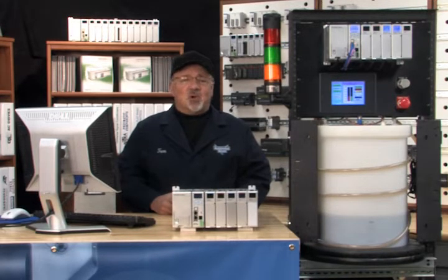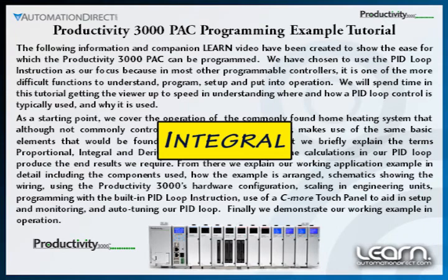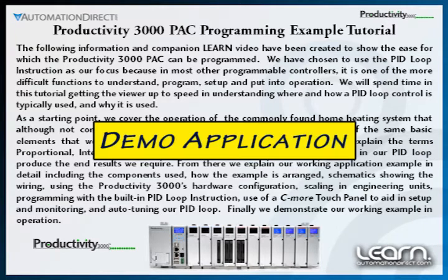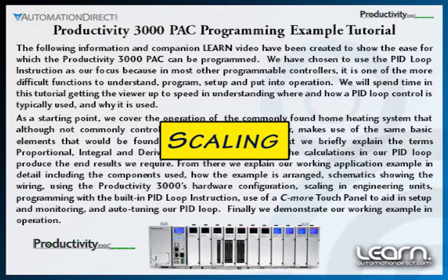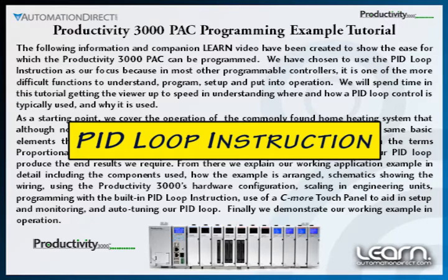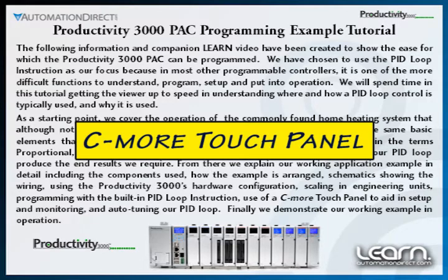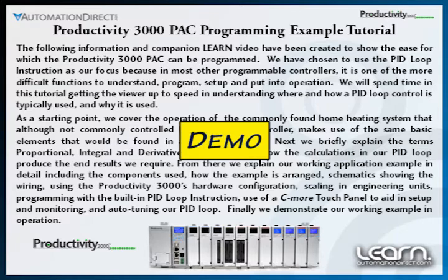In the course of this video series, I will cover a common application most of you will be familiar with that includes the basics found in a PID loop. I'll explain the operation of proportional, integral and derivative control; describe a simple demonstration application; cover the hardware and wiring used; explain set points and process variables; create and use tag names to speed up programming; show how to scale variables into engineering units; use the Productivity 3000's built-in PID loop instruction; incorporate a C-more touch panel for setup, monitoring and operation; and manually and automatically tune the loop and demonstrate the end result.